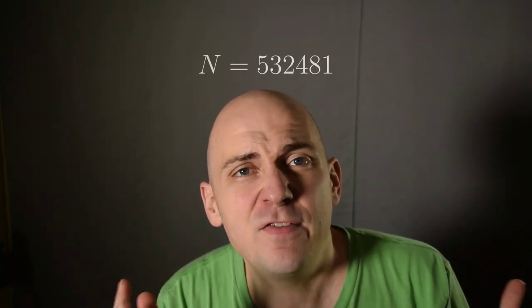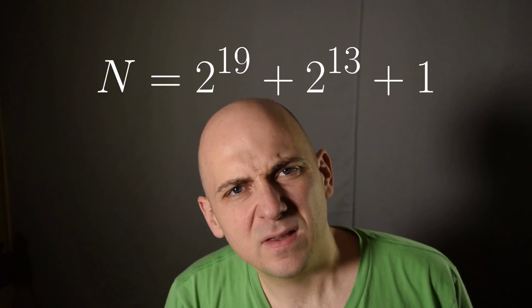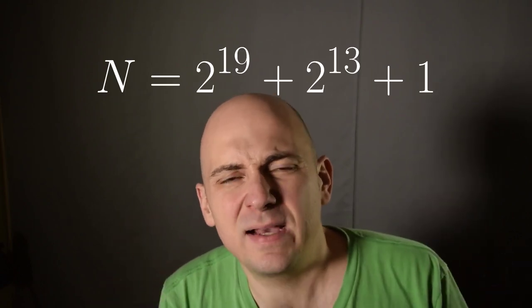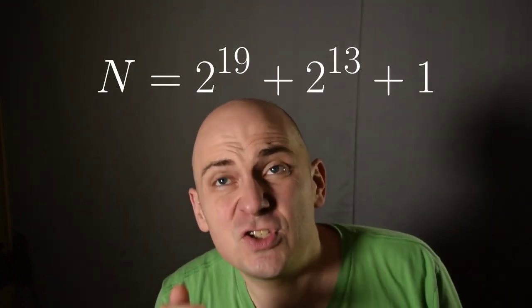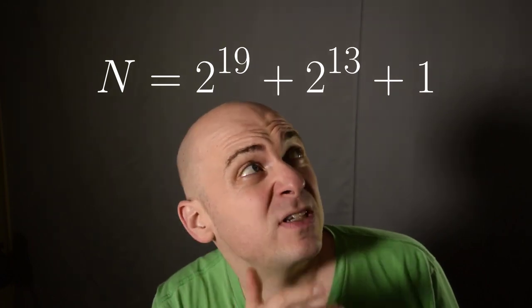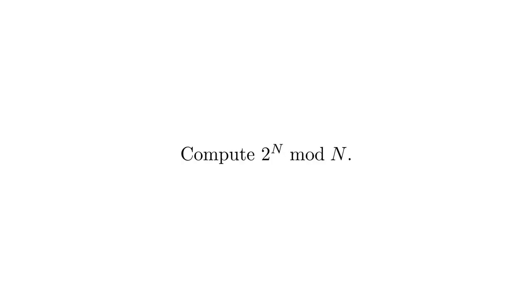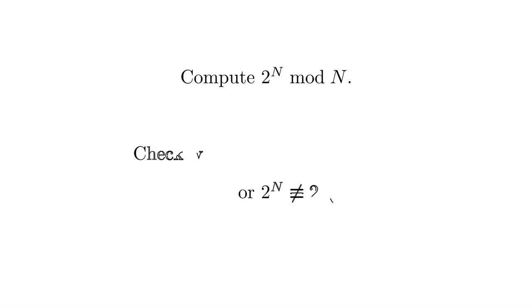So let's try this. Let's try this with a specific number, like 532,481. Now, I've chosen that number partly because it has this nice structure. It's 2 to the 19th plus 2 to the 13th plus 1. So we're going to compute 2 to the n, and we're going to see if that is or is not congruent to 2 modulo n.